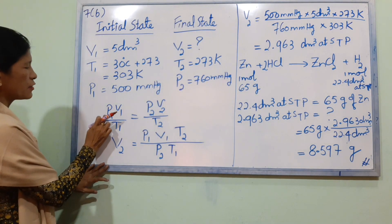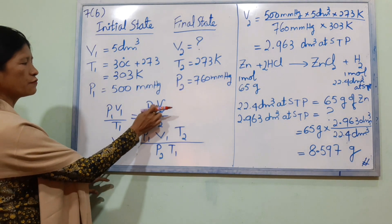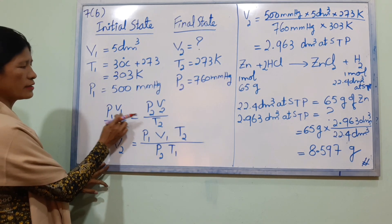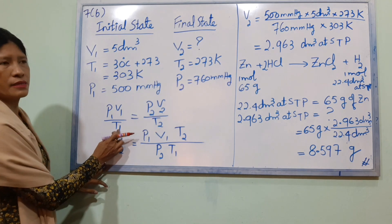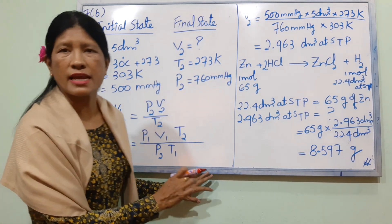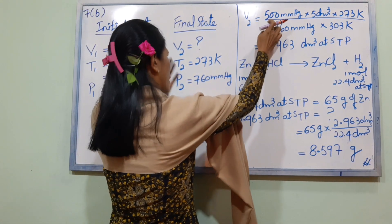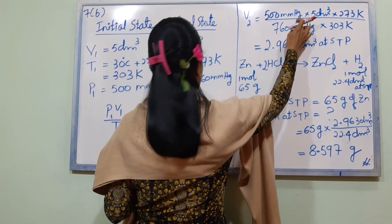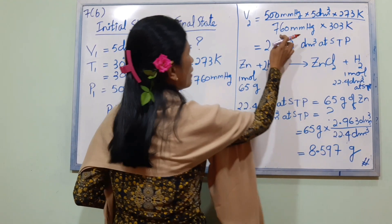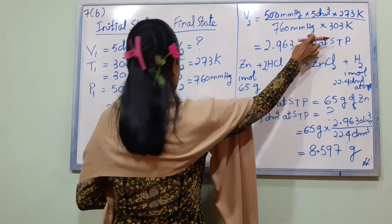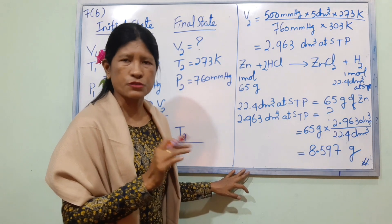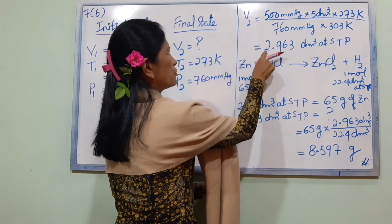Using the combined gas law formula: P1·V1/T1 = P2·V2/T2, we solve for V2. Rearranging: V2 = (P1·V1·T2) / (P2·T1) = (500 × 5 × 273) / (760 × 303). The result is V2 = 2.93 dm³.